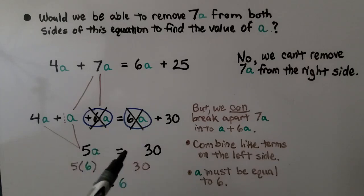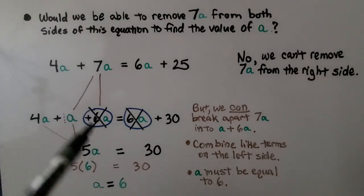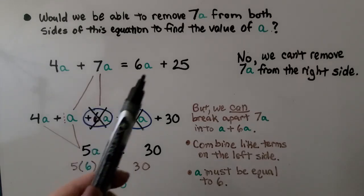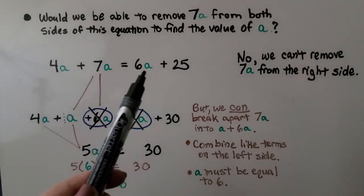And we think 5 times something is equal to 30. Well, 5 times 6 is equal to 30. A must be equal to 6. So we're going to learn more about this in the next few parts of this lesson. So we have to be very careful. We can't take 7a away from both sides, but we can take 6.